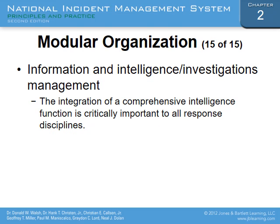Information and intelligence investigation management is critically important to all response disciplines. This relates to the parallel sixth functional group — an intelligence/investigations slash law enforcement branch. This has become especially important following recent terrorist incidents. Even while saving people and recovering from an attack, you cannot forget the need to find out who is responsible. This intelligence investigation subset must work within the command system during initial operations so that evidence is not destroyed or lost — it must be ongoing, not an afterthought.